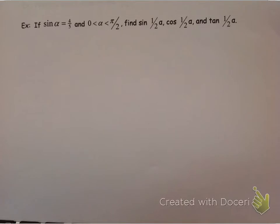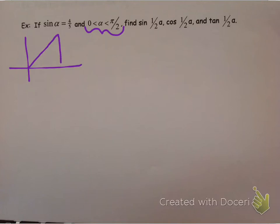The first problem is our picture-drawing problem. I've been told that angle A is in between 0 and pi-halves, so that means it's quadrant 1. I was told that sine of angle A was 4/5, so the opposite side was 4 and the hypotenuse was 5, which makes the adjacent side 3. Now I can evaluate all my trig values.